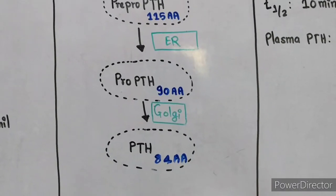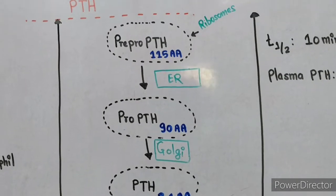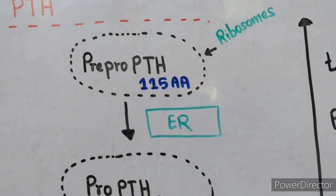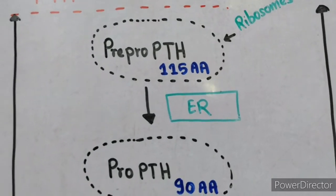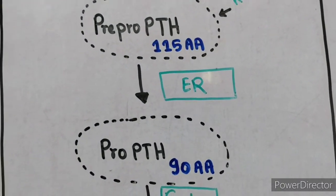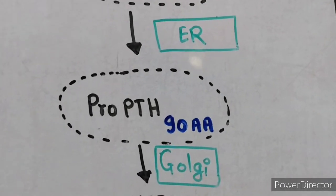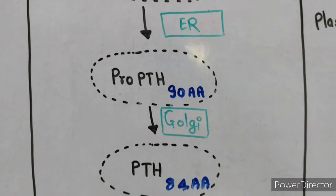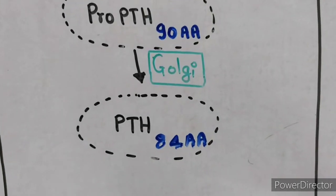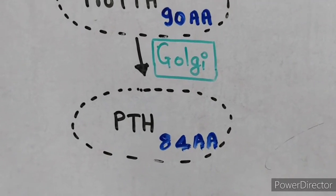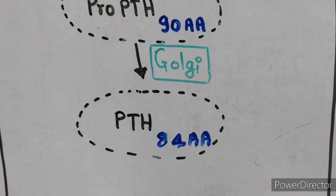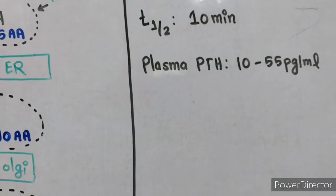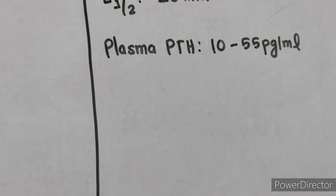Parathyroid hormone, containing 84 amino acids, is synthesized as part of a larger polypeptide called pre-pro-parathyroid hormone, which contains 115 amino acids and is synthesized in ribosomes. When this polypeptide enters the endoplasmic reticulum, some amino acid sequences are removed to form pro-parathyroid hormone containing 90 amino acids. When pro-parathyroid hormone enters the Golgi apparatus, six amino acids are removed to form parathyroid hormone with 84 amino acids, which is packaged in secretory vesicles and released from chief cells. The half-life of parathyroid hormone is about 10 minutes and the normal plasma level is 10 to 55 picograms per mL.